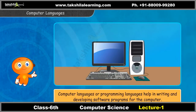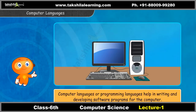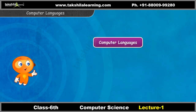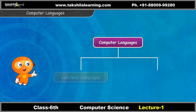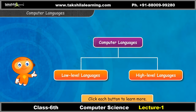Do you know how software programs are developed? Computer languages, or programming languages, help in writing and developing software programs for the computer. They can be classified into low level and high level languages. Click each button to learn more.